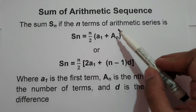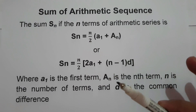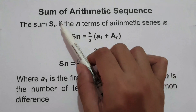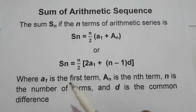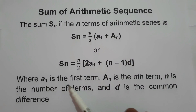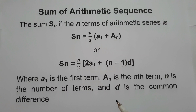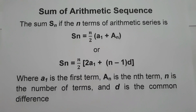So these are the different formulas we're going to use to find the sum of an arithmetic sequence, where A sub 1 is the first term, A sub n is the nth term, n is the number of terms, and d is the common difference. Let's start and have an example.